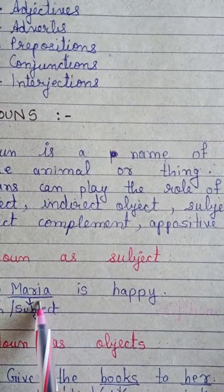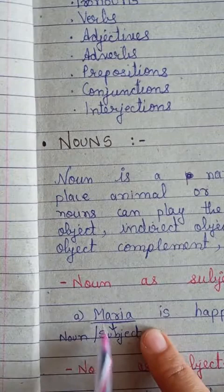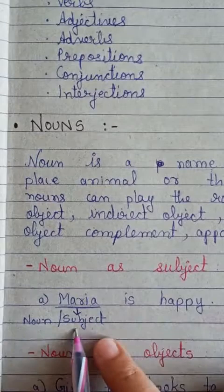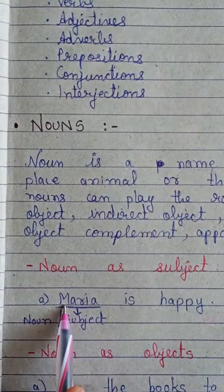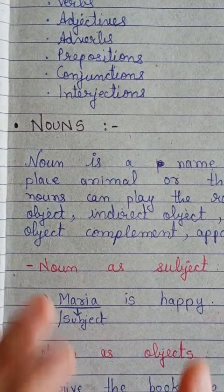Noun as subject: if we say 'Maria is happy,' then Maria is a name, so obviously Maria is a noun. Maria is also the subject of this sentence — the sentence is related to Maria, so Maria is the subject.